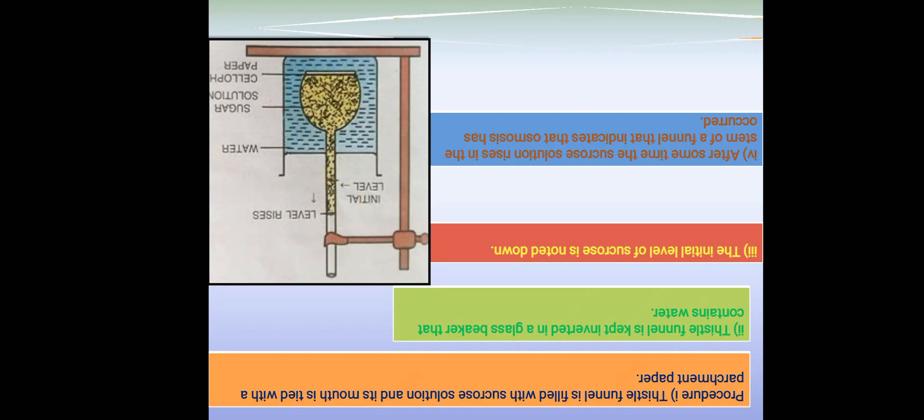Observation: The level of water in the thistle funnel has increased. The initial level is here and the level has gone up. The results of the experiment show the movement of water through the cellophane sheet or parchment membrane to the thistle funnel.